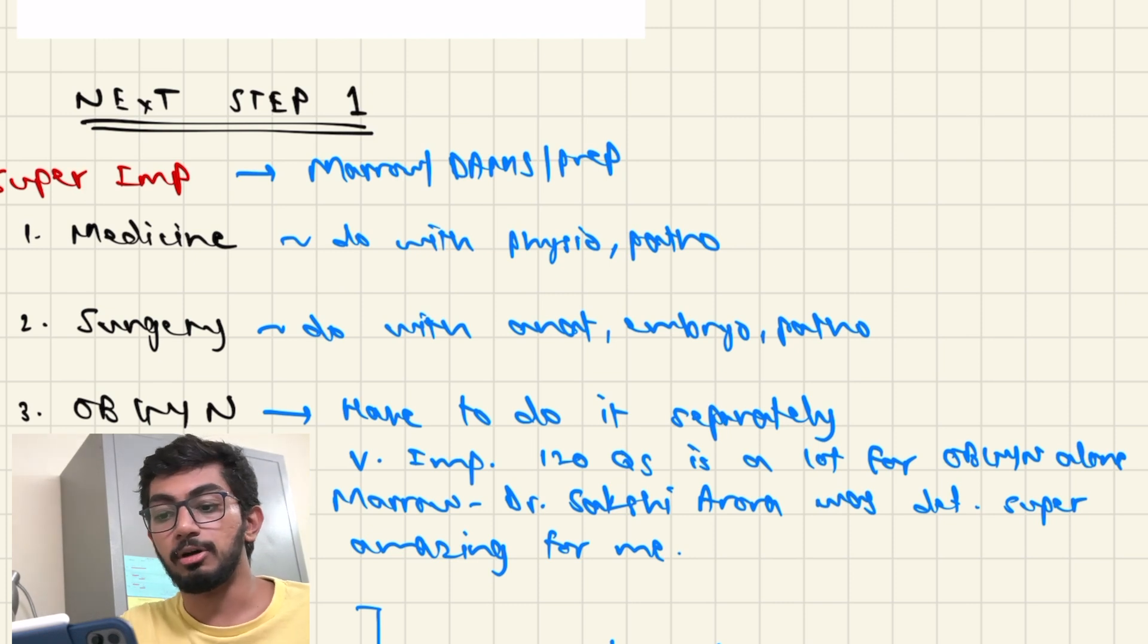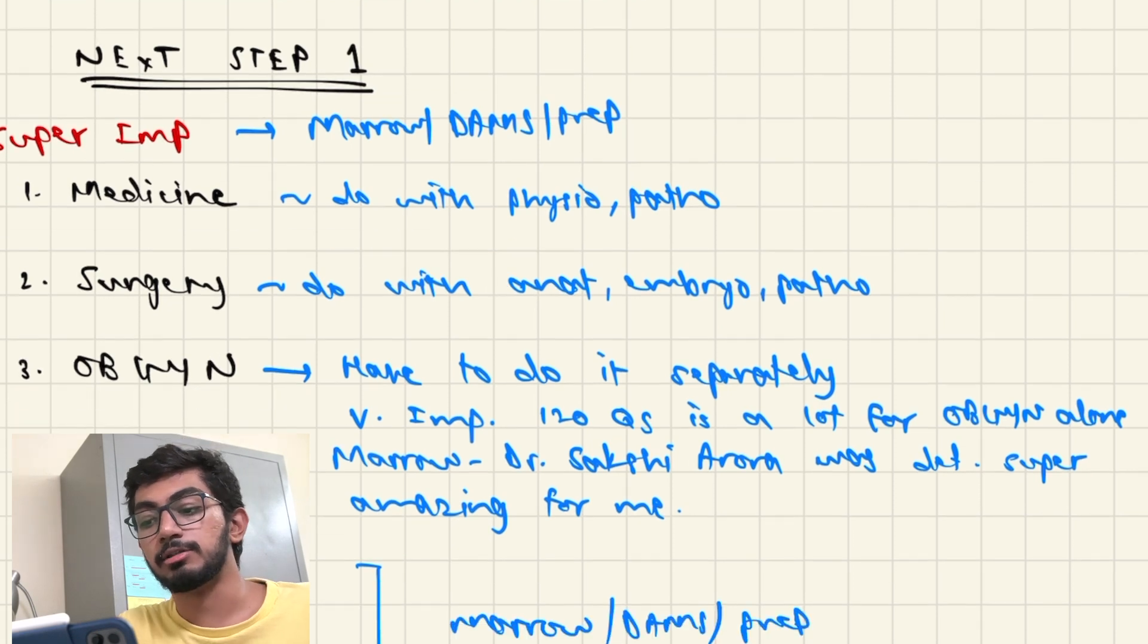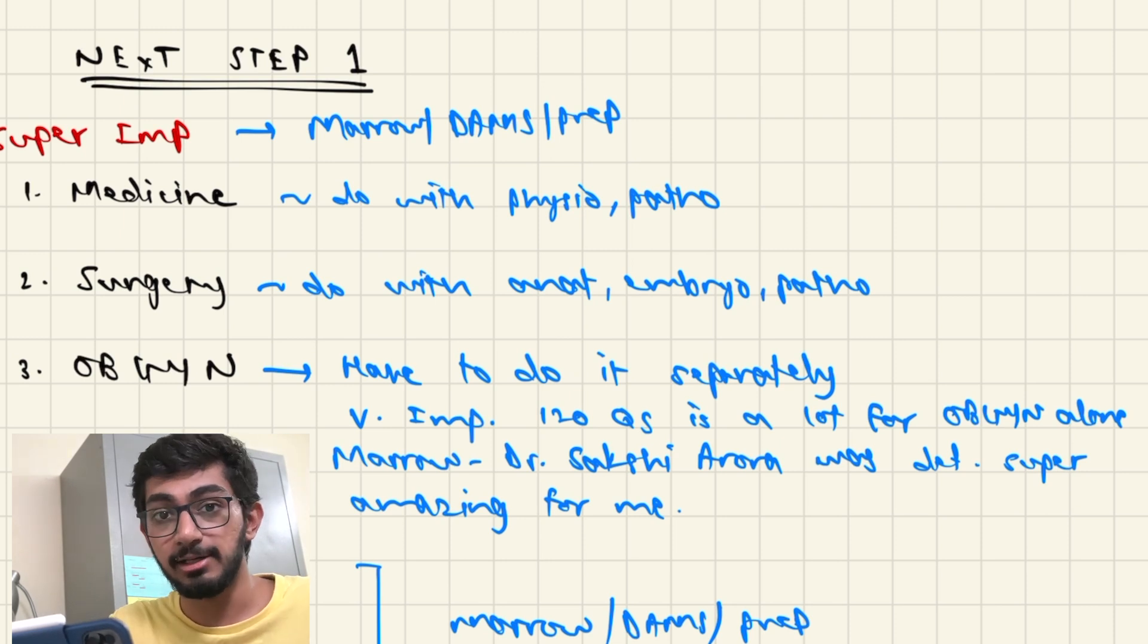And also something that I would recommend you guys do is do Medicine along with Physiology and Pathology and do Surgery along with Anatomy, Biochemistry and Pathology. OBGY you should do it separately and the thing is that 120 questions for OBGY is a little bit too much but I think you can definitely manage it with the Marrow notes that are present and do from those.